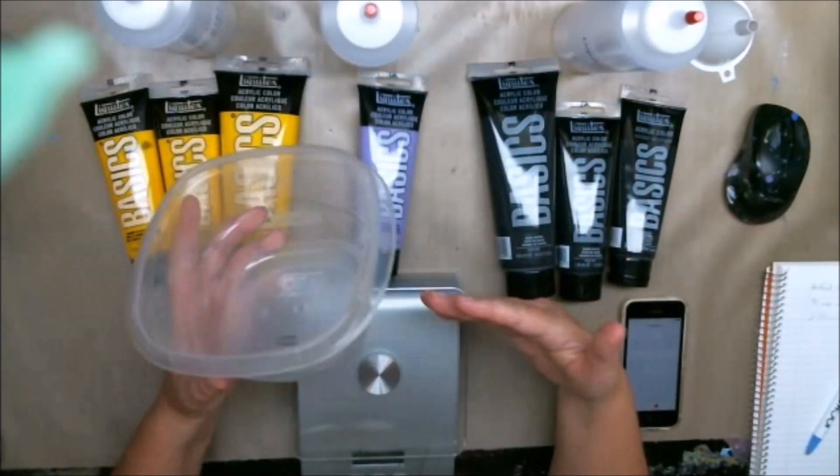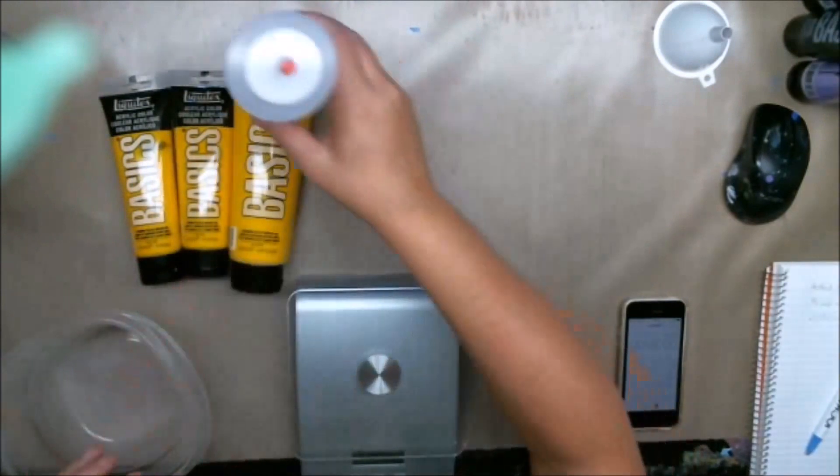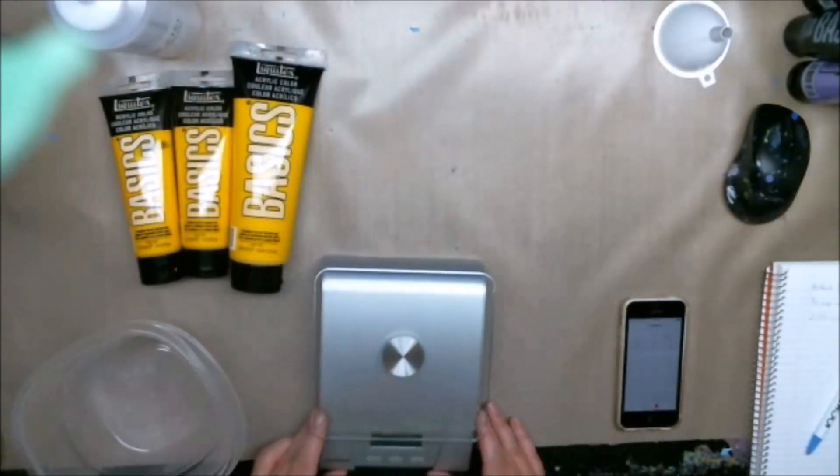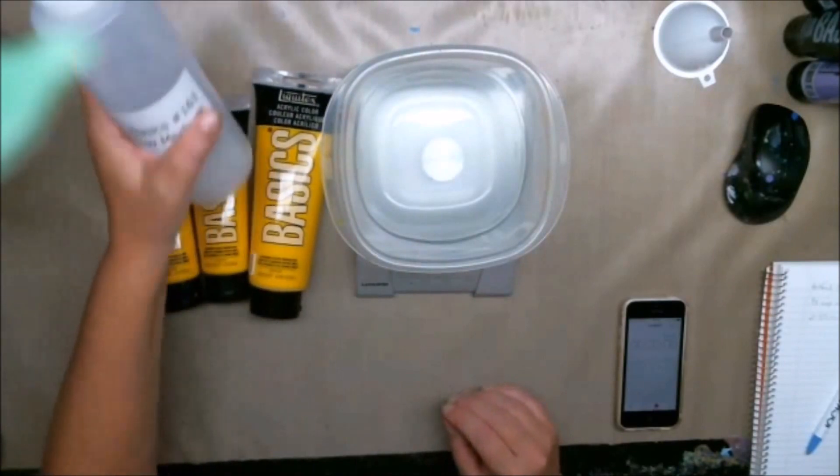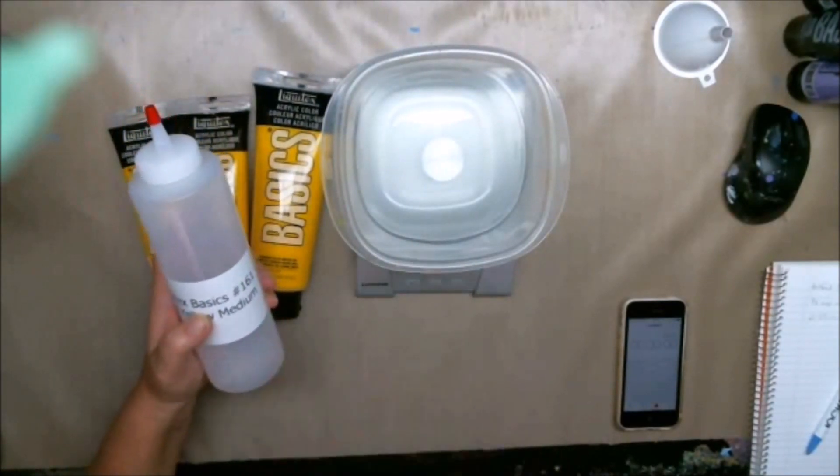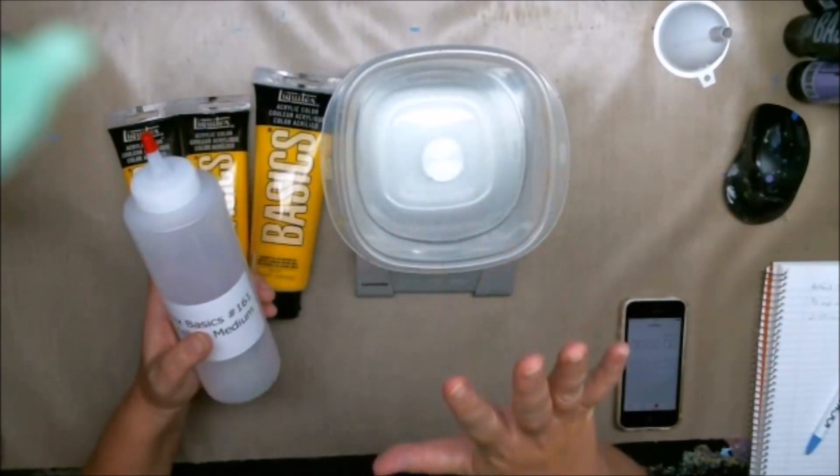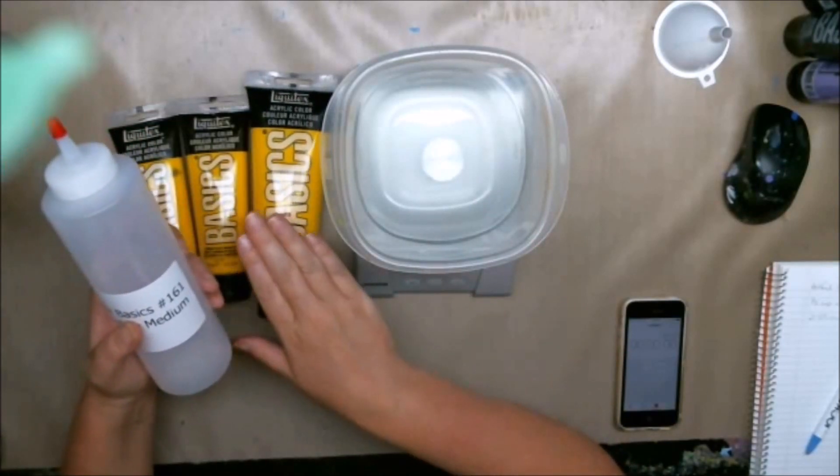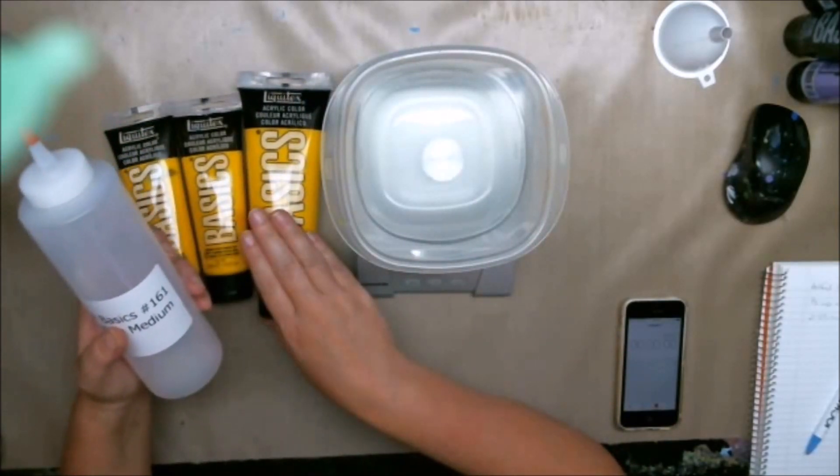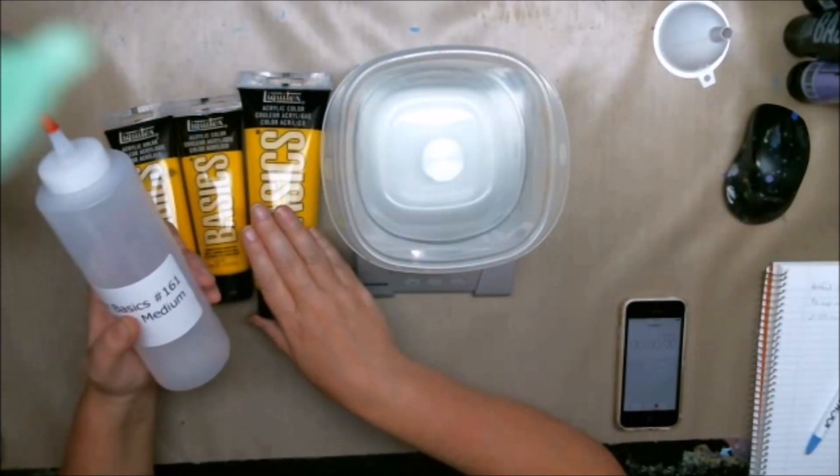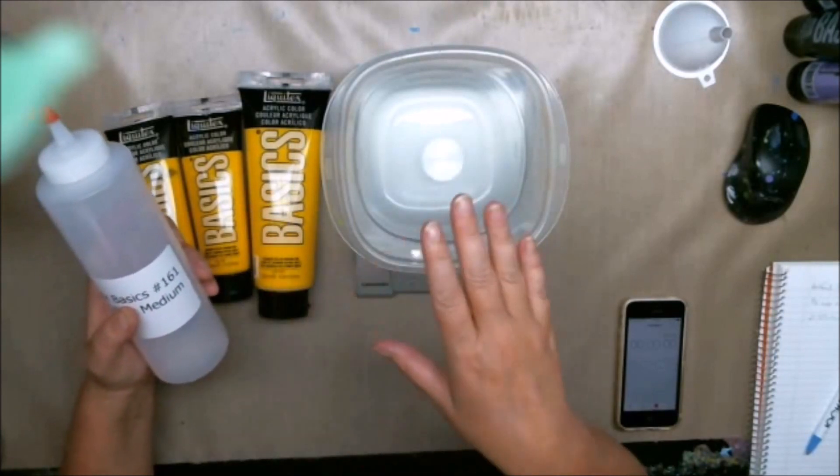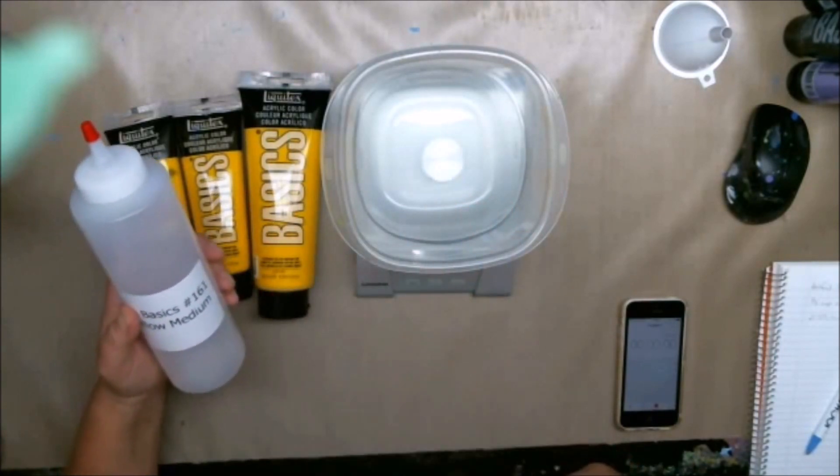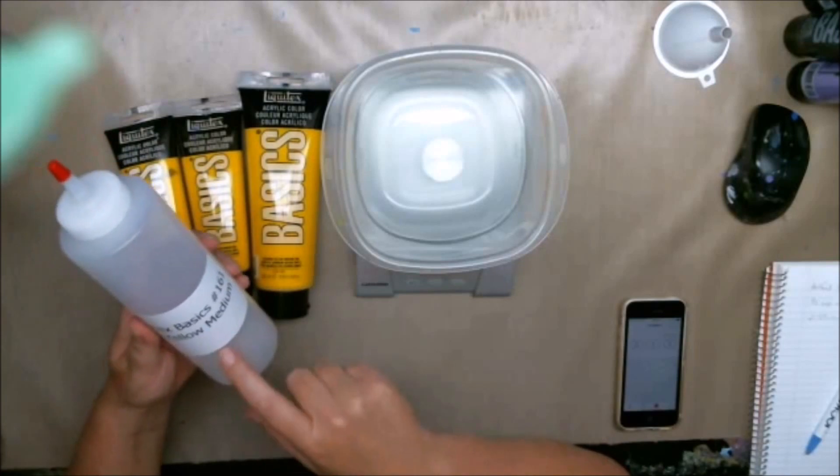So once you do the test for whichever ones you want to do, then you're good. Now every time you change paint or change recipe, you have to do it. We're going to make the yellow paint, test the yellow paint, and then put the yellow paint into the tube. Now when I have my recipe, which I already have—and actually for the Liquitex Basics my recipe is 50/50, so it's 50% water and 50% paint—and that's what we're going to make today.